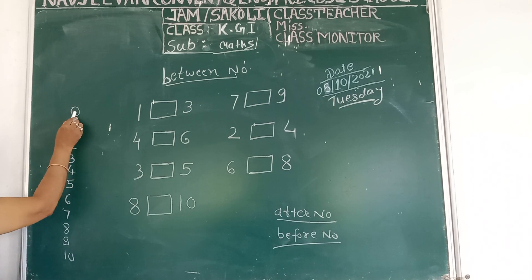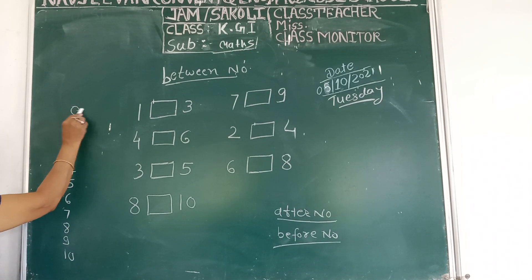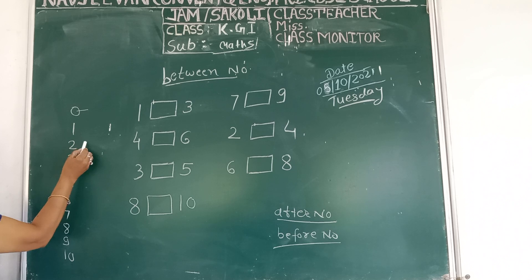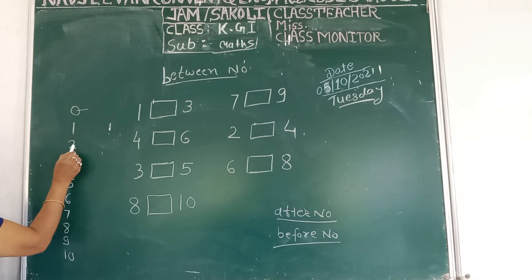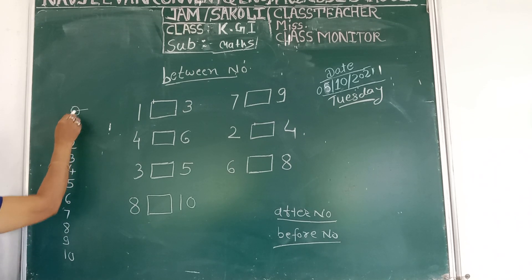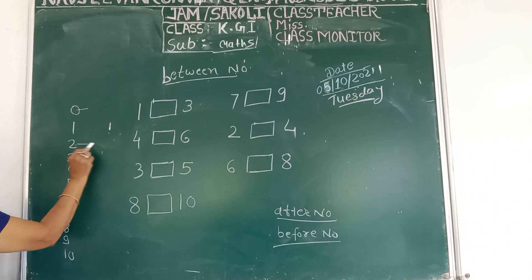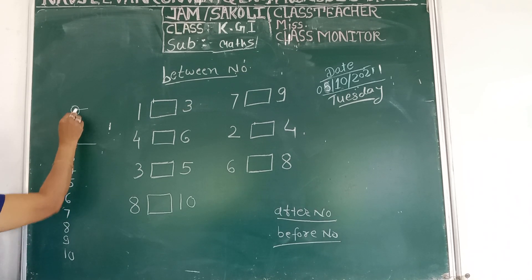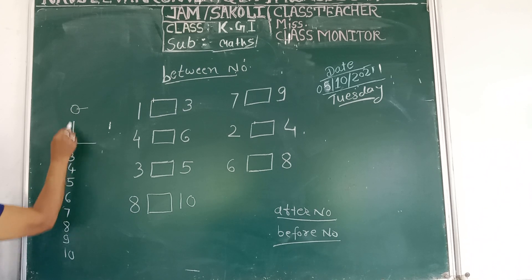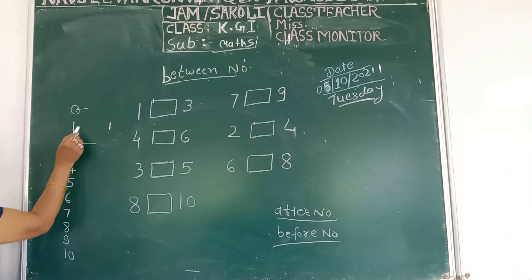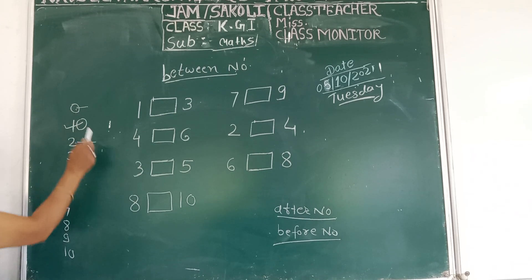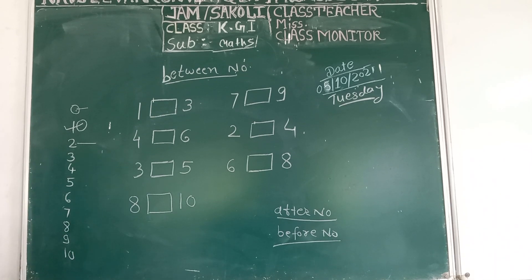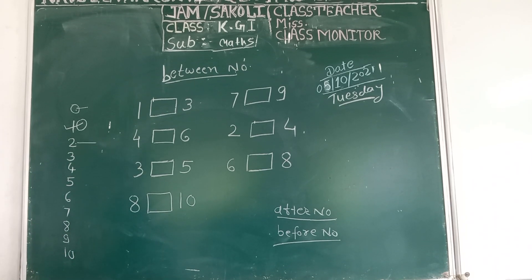Dekho. It's zero, and it's one, and it's two. Now zero and two — so which number is between? One. Which number is one? One.